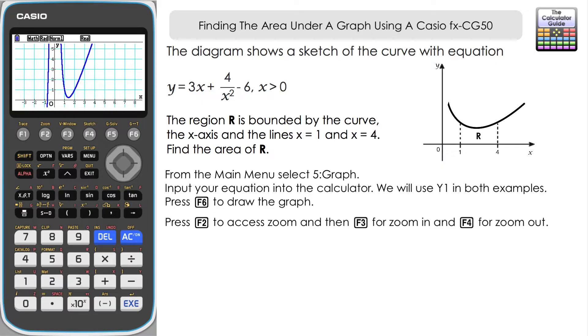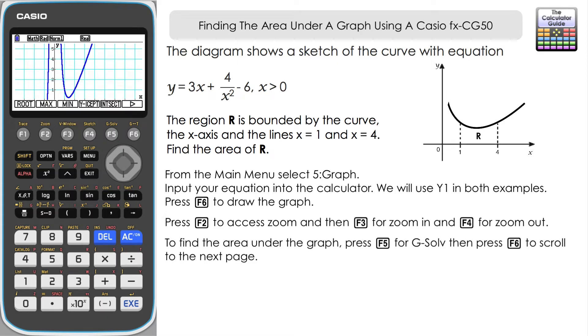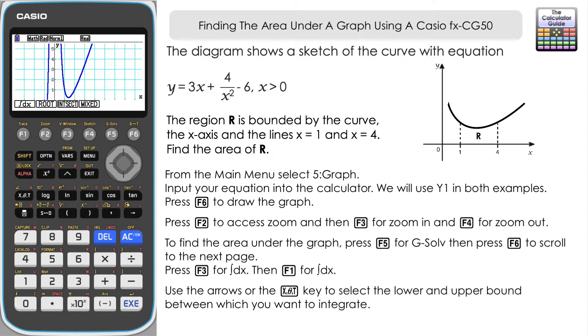Now we want to know about this area between 1 and 4 that's under the graph but above the x-axis, and we can use the facility within the fx-CG50 to help us find that. If you press F5 for G-Solve, and it's not on the first page so we need to press F6 to scroll to the second page, you can see here we've got the function, well basically an integration function, integration dx. So let's press F3. And for this first example, we're going to choose the first option here, F1.